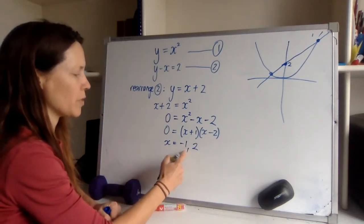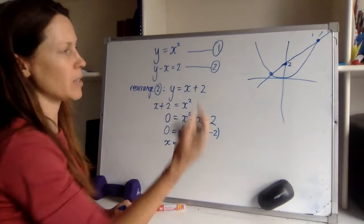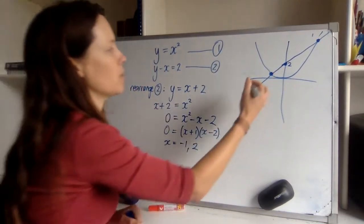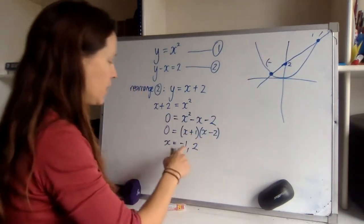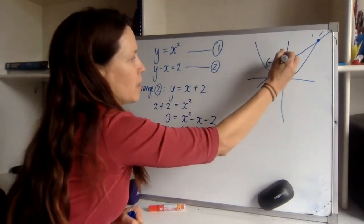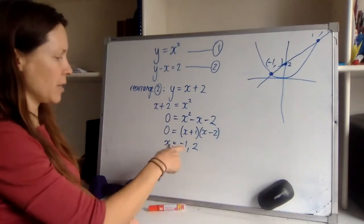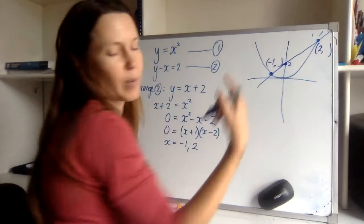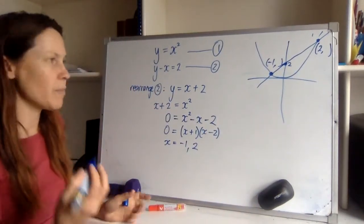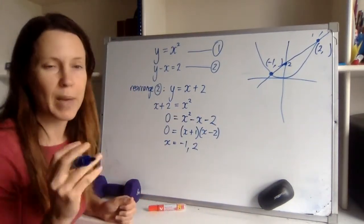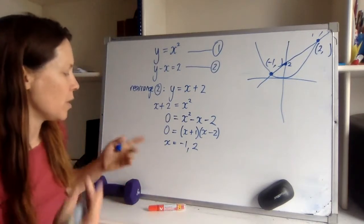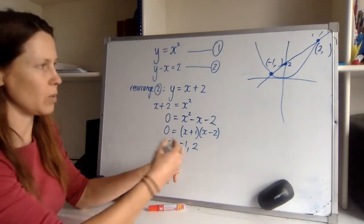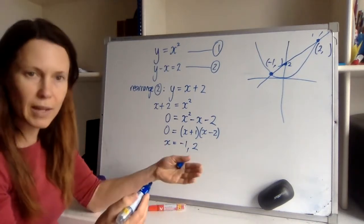So those are my two solutions for x. Now that makes a lot of sense with my picture. I'm thinking that these two graphs are going to intersect twice. This point here obviously is minus one something, we're not sure what the y value is. And this point over here must have an x value of two. Now we just need to find both y values. Now it's important that you keep both pairs of answers together, pairs of solutions.